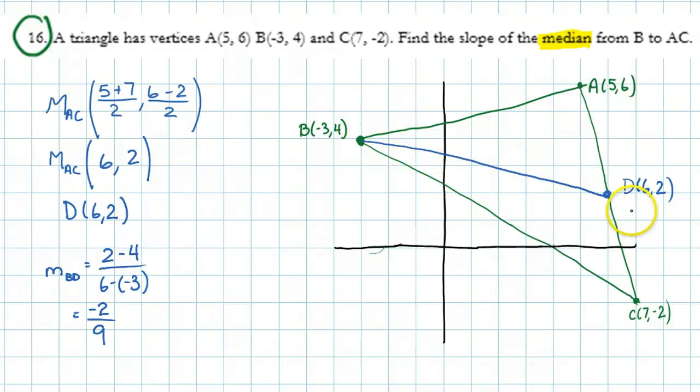The slope is negative. And in fact, what's really nice is I can count it off. So let's look. Down 2, over 9. So there you go.